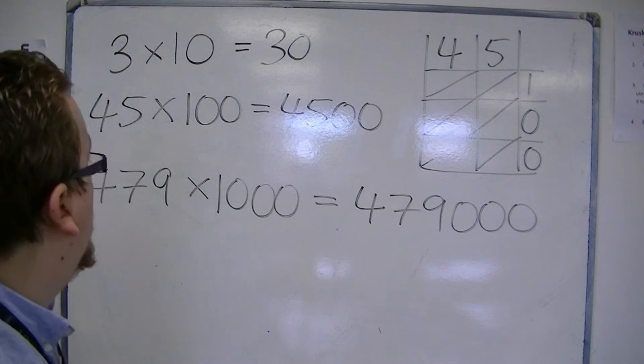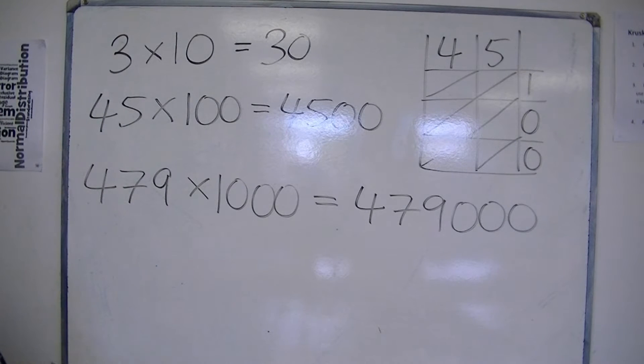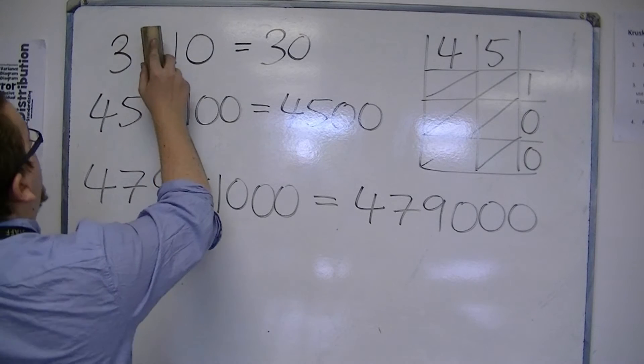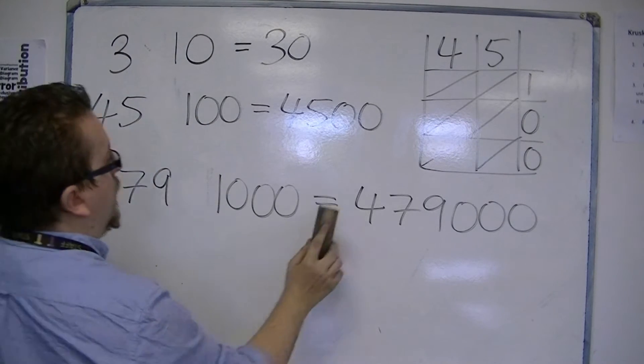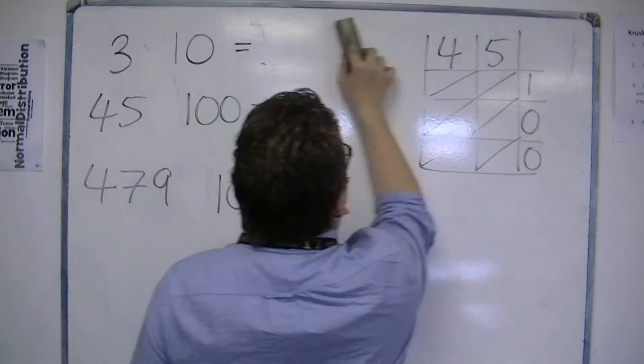So, that's multiplying with tens, hundreds and thousands. What if we're dividing? What if I turn these into divisions instead?